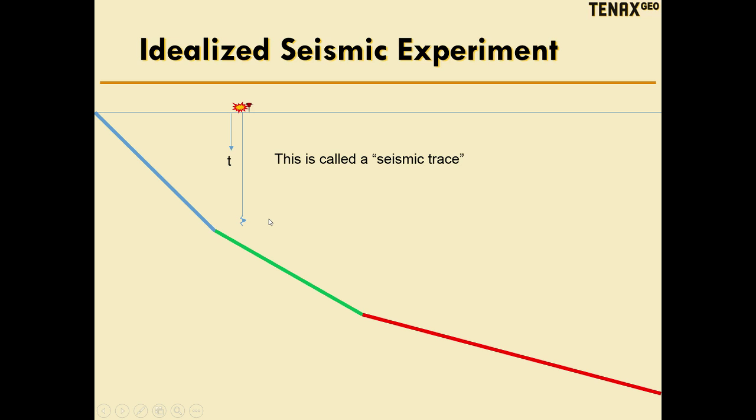When we record the signal, we don't actually know where spatially the signal came from. All we know is that at a certain location here at the surface, we recorded a reflection pulse at time T. This signal that we record, this time series that we record in the geophone is called a seismic trace.